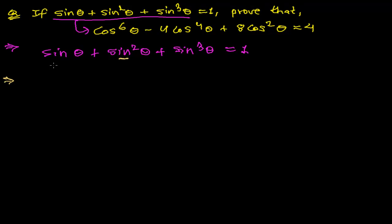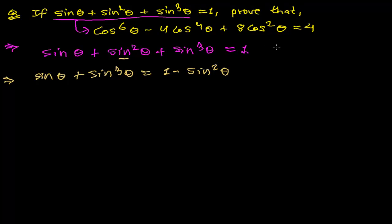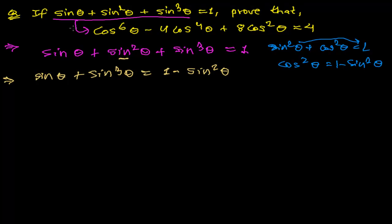So I keep sin θ and sin³θ on the left, and move sin²θ to the right side, giving 1 - sin²θ. We know from the identity sin²θ + cos²θ = 1 that 1 - sin²θ = cos²θ. So I replace 1 - sin²θ with cos²θ on the right side.